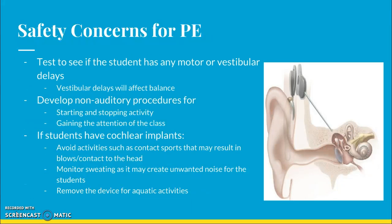One of the biggest safety concerns with deafness is that students have real trouble keeping their balance. You want to test for any motor or vestibular delays, as vestibular delays will cause problems with balance. You also want to develop non-auditory procedures for the class for starting and stopping activities and gaining the class's attention, using hands to guide the class rather than relying on noise. Students may need cochlear implants, especially with sensorineural hearing loss. In this case, avoid heavy contact sports particularly to the head, as a hard blow can cause severe damage to cochlear implants. Also, moderate sweating can create unwanted noise for students, and the device should be removed for aquatic activities as most are not waterproof.